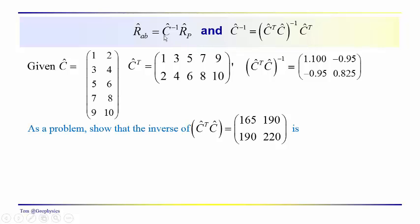We've got the basic equation and we want to figure out what this inverse C is. We can calculate it using the Marquardt-Levenberg approach. Here's C and here's C transpose. The transpose is a simple idea — we take the rows of the C matrix and turn them into columns: 1, 2, 3, 4, 5, 6, in 5 columns. Likewise, we take the columns and transpose them into rows: 1, 3, 5, 7, 9 and 2, 4, 6, 8, 10. That's really all that a transpose is.